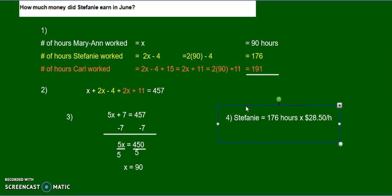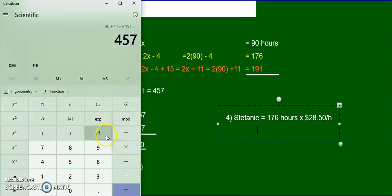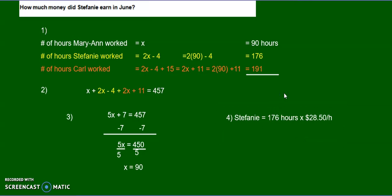And when you multiply that, you get, let's do it. 176 times 28.5. She earned $5,016. So that's the answer. She earned $5,016, and that's the final answer.